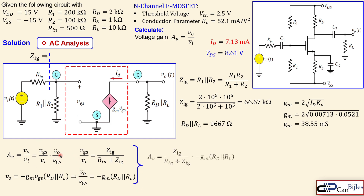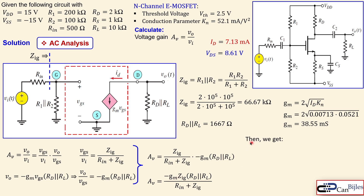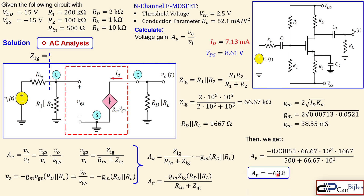Combining both ratios, the full voltage gain expression is VO/VI = −GM × (RD ∥ RL) × ZIG / (RIN + ZIG). Substituting GM = 38.55 mS, RD ∥ RL = 1667 Ω, ZIG = 66.67 kΩ, and the source resistance RIN gives a voltage gain of −63.8. The negative sign confirms the common-source amplifier inverts the signal, similar to the BJT common-emitter.